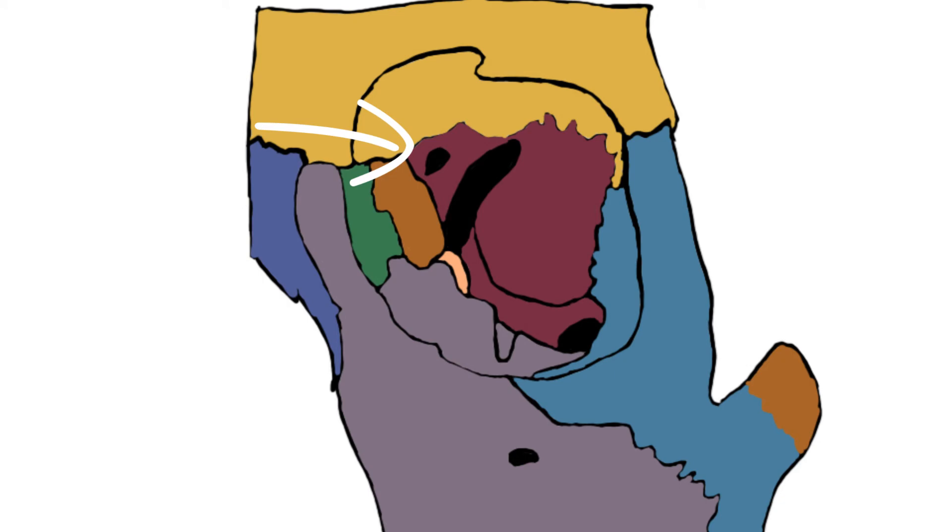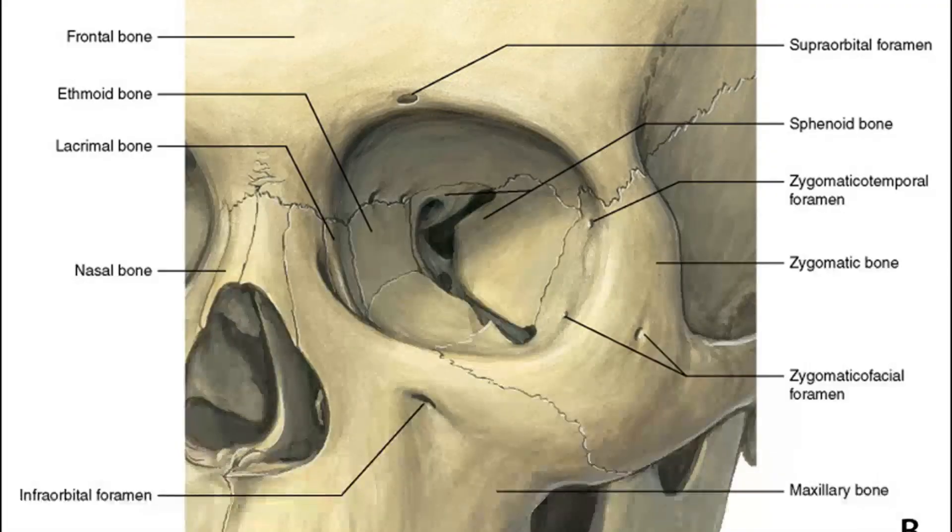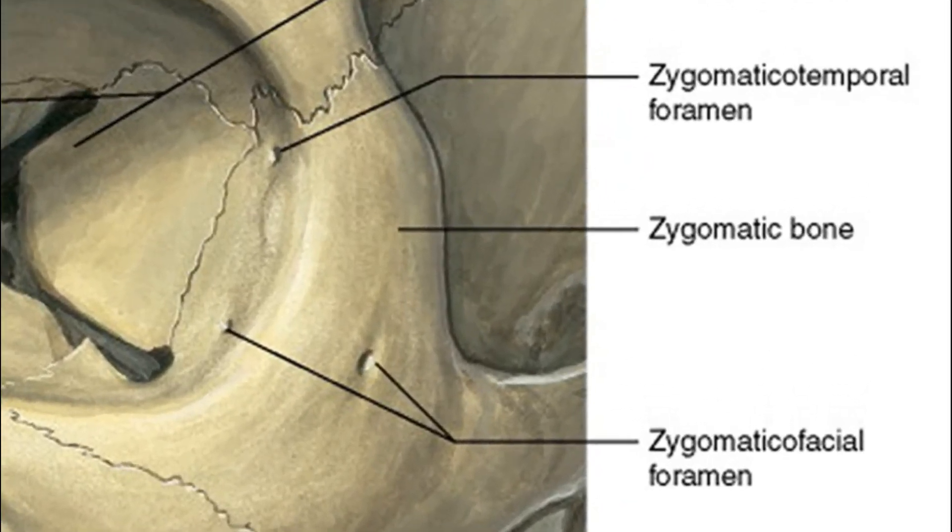There's also the anterior and posterior ethmoidal foramina, through which passes the anterior and the posterior ethmoidal artery, vein, and nerve respectively. You also have a zygomatic orbital foramen, which is of two types: you have a zygomatic temporal and a zygomatic facial, through which passes the zygomatic temporal and zygomatic facial nerves respectively.